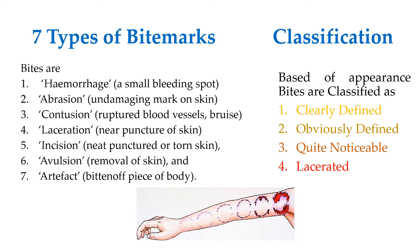The first type is hemorrhage, where a small bleeding spot can be observed. The second type is abrasion, where undamaged skin surface markings are present. The third type is contusion, where ruptured blood vessels and bruises can be seen.